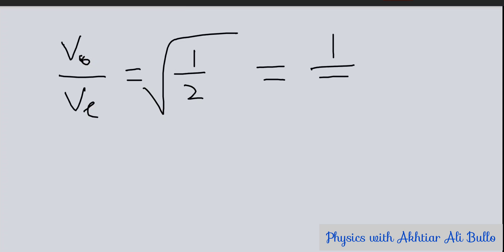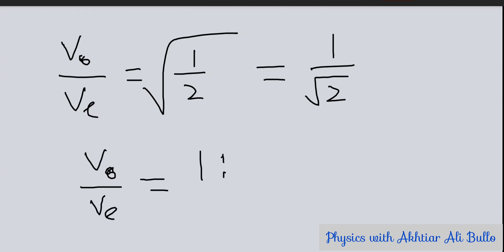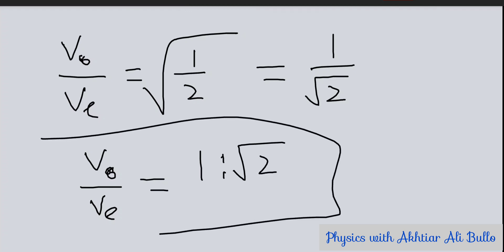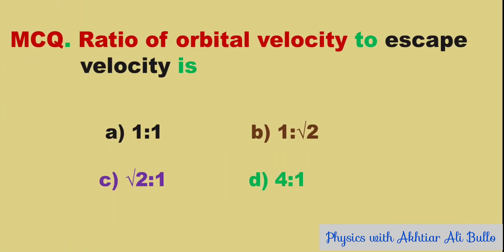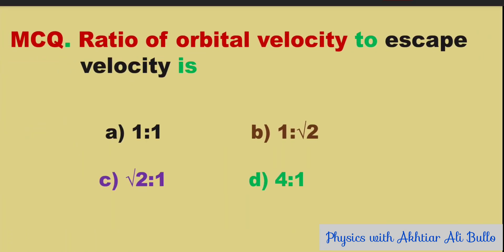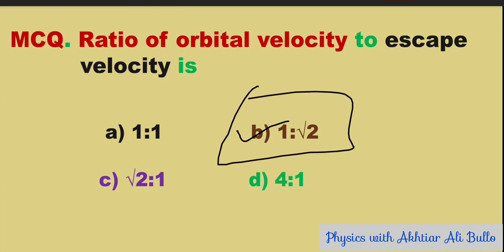Therefore, the ratio of orbital velocity to escape velocity is 1:√2. We can also write it as the ratio being equal to 1:√2. So the correct option is (b) 1:√2.